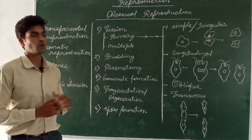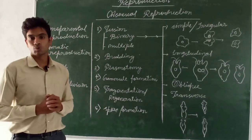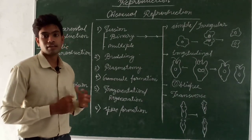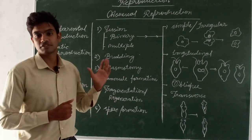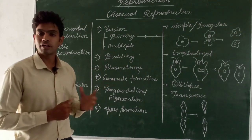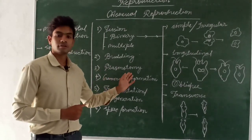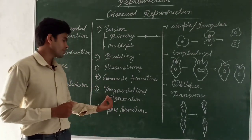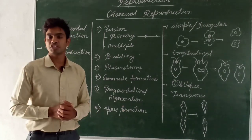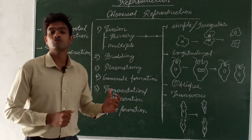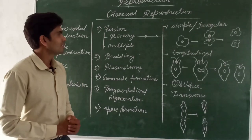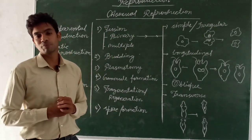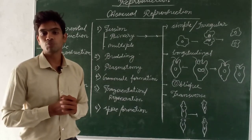Asexual reproduction has been categorized into six types: the first is fission, second is budding, third is plasmotomy, fourth is gemmule formation, fifth is fragmentation or regeneration, and the sixth is spore formation.